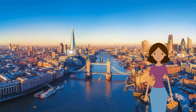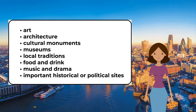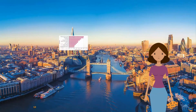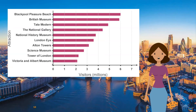Types of man-made tourist attractions in the UK include art, architecture, cultural monuments, museums, local traditions, food and drink, music and drama, and important historical or political sites. This table shows that tourists in London are attracted to many different types of man-made tourist attractions. There are many different types of tourist attractions that people may find appealing, and over time preferences and fashions may change.